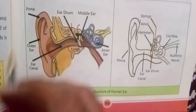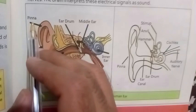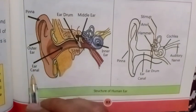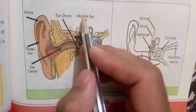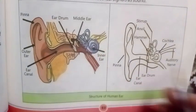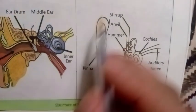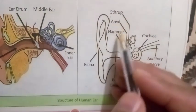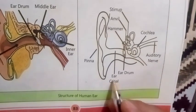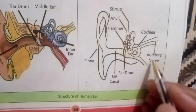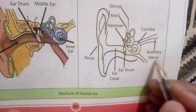Structure of the human ear: Pinna, outer ear, ear canal, eardrum, middle ear, inner ear. The labeled parts include: stirrup, anvil, hammer, pinna, ear canal, eardrum, auditory nerve, and cochlea.